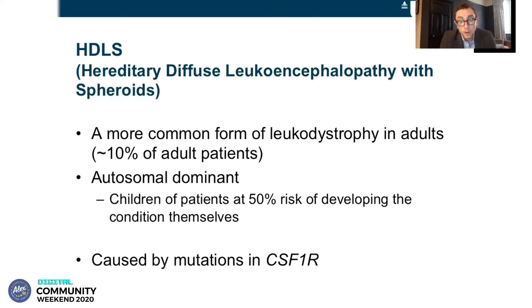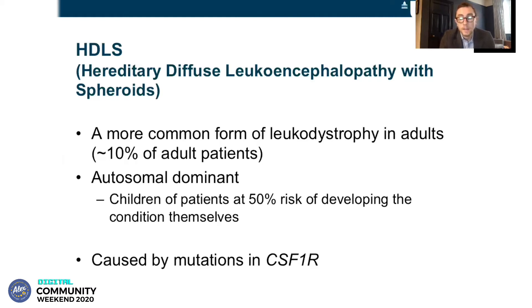One of the leukodystrophies that occurs mostly in adults — and there are some adults supported by Alex TLC with this condition — is HDLS. This stands for hereditary diffuse leukoencephalopathy with spheroids. It's one of the more common forms of leukodystrophy in adults, although it is extremely rare, accounting for about 10% of adults with leukodystrophy. It's autosomal dominant in its inheritance, meaning a child of a patient with HDLS has a 50% chance of developing HDLS themselves. Most leukodystrophies are autosomal recessive, but this is autosomal dominant, which is important for genetic counselling. HDLS is caused by mutations in a gene called CSF1R, so the terms HDLS and CSF1R leukodystrophy can be used interchangeably.